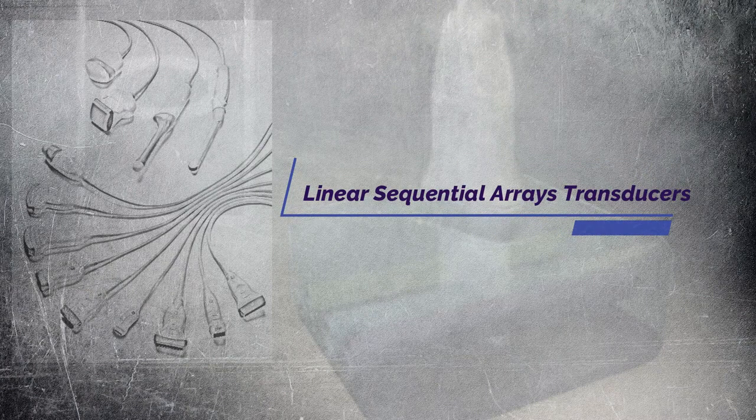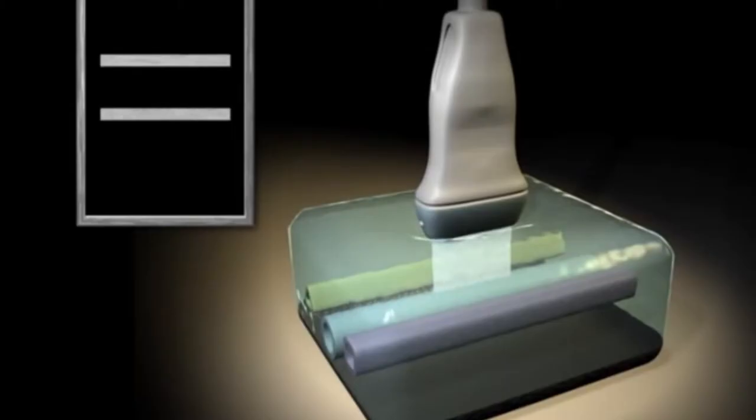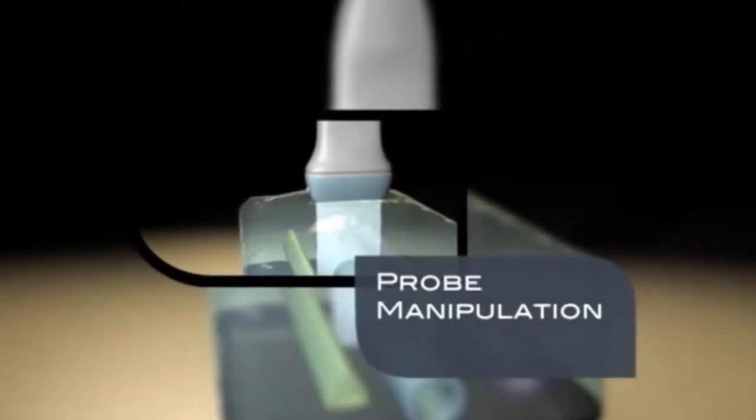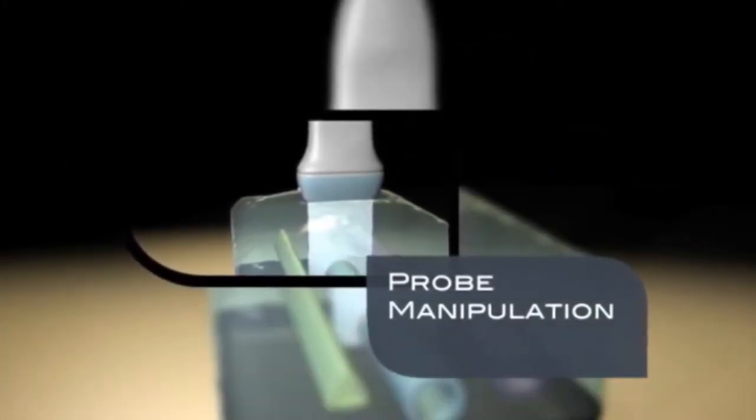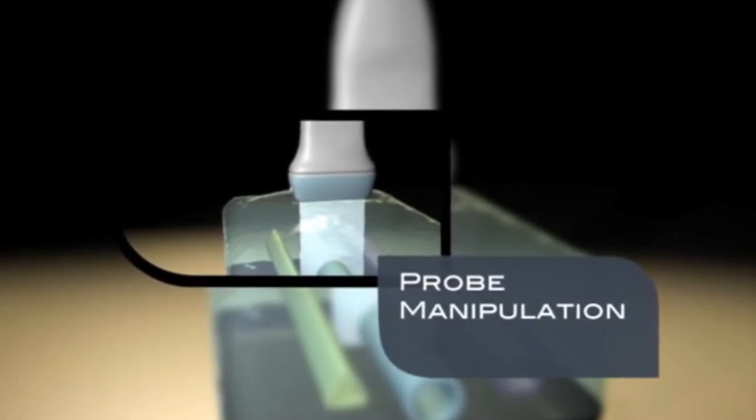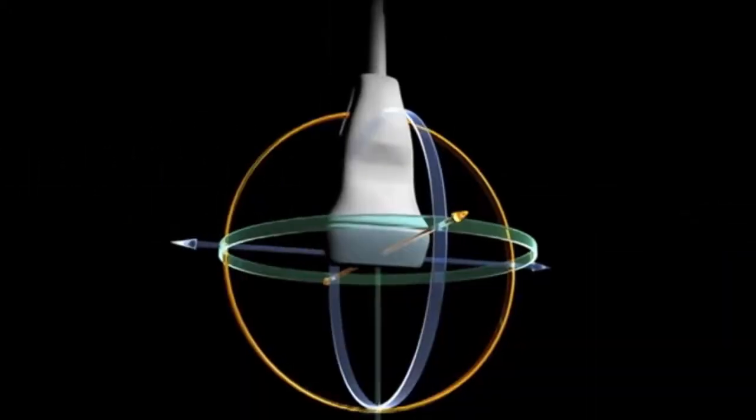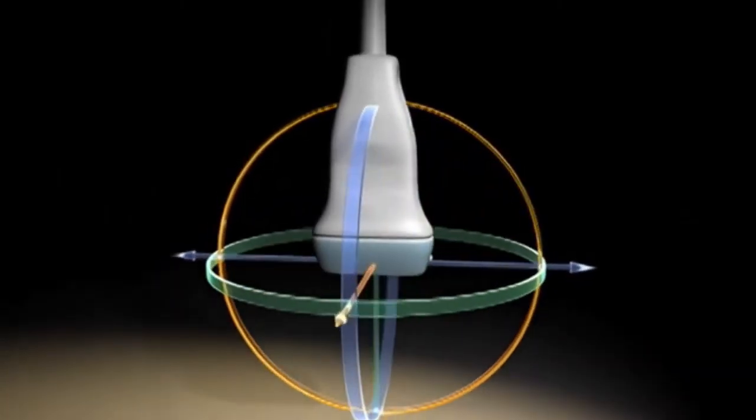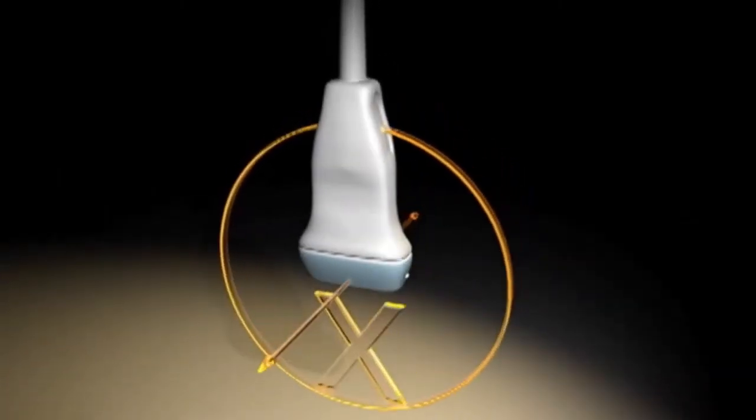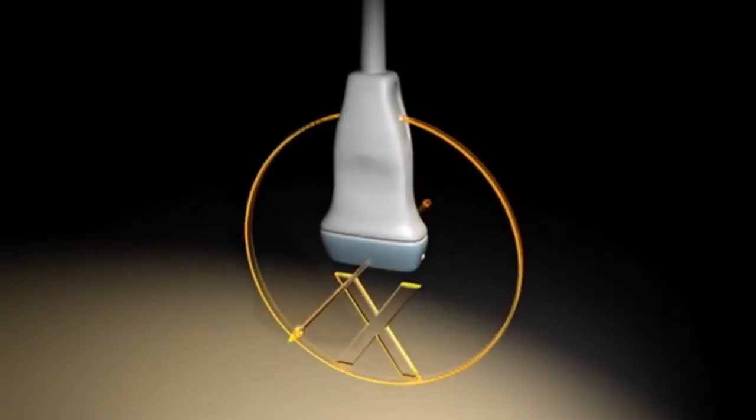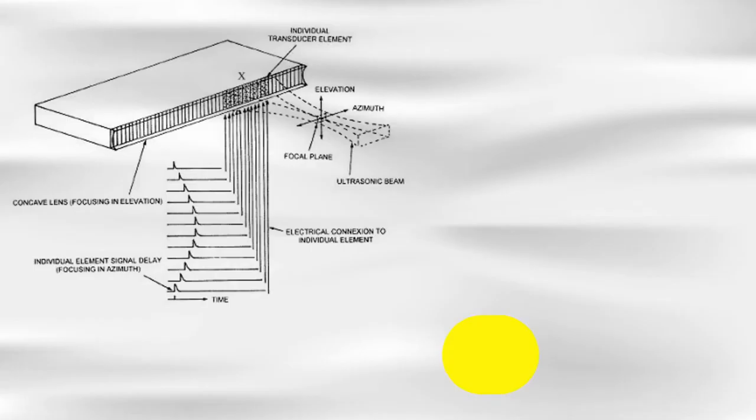Let's know about linear sequential arrays transducers. The scanning lines are directed perpendicular to the face of the transducer. The beam is focused but not steered. Linear array transducers are available with 512 elements in currently available ultrasound scanners. Generally, up to 128 elements are selected at a time for operation. As is obvious from the diagram, the field of view with a linear array arrangement is limited to the rectangular region directly in front of the transducer.